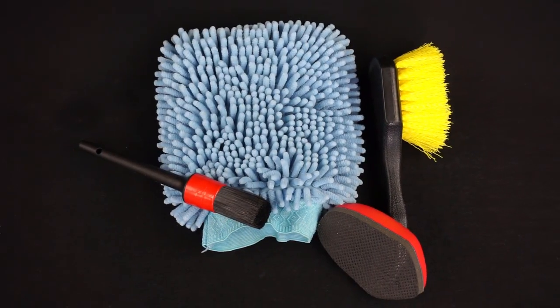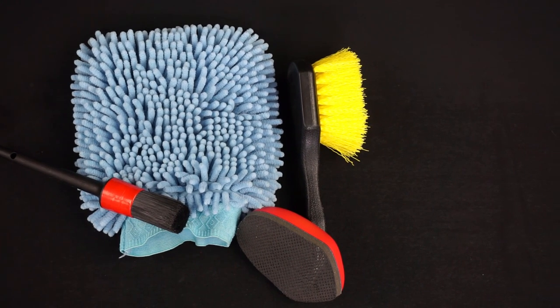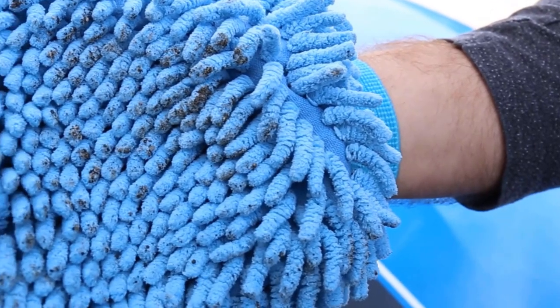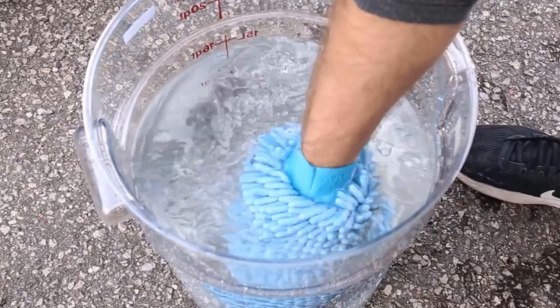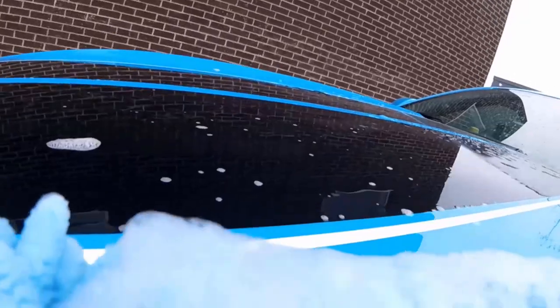Each time you place your wash glove, brush, or other items on the vehicle, they pick up millions of dirt particles that end up lodged inside the fibers. When you dunk them in the water, these harmful particles will float around in the bucket waiting to reattach to your tools and scratch the paintwork.